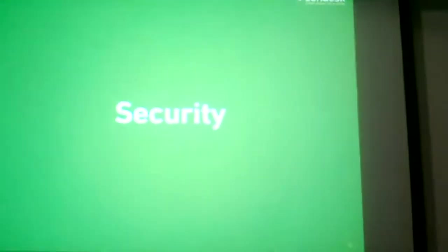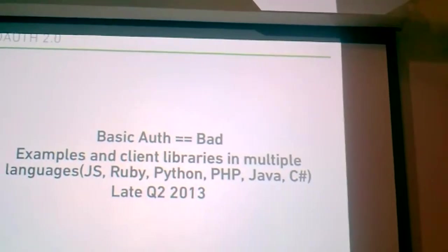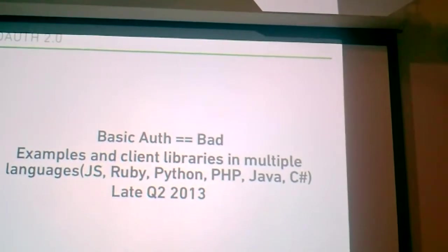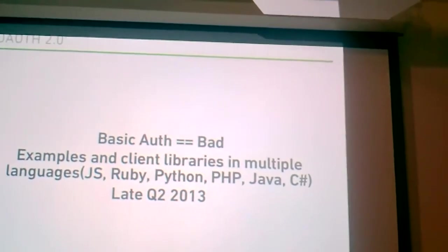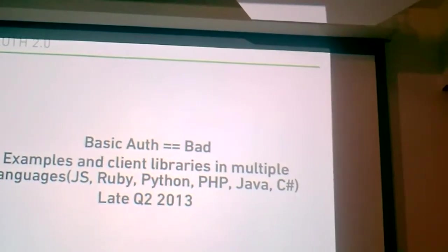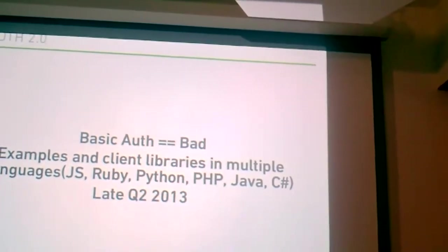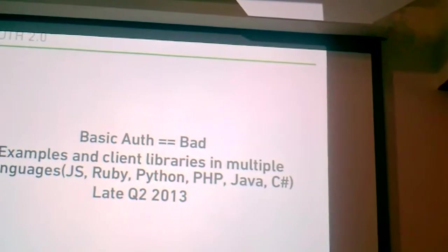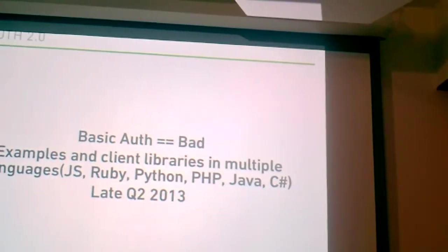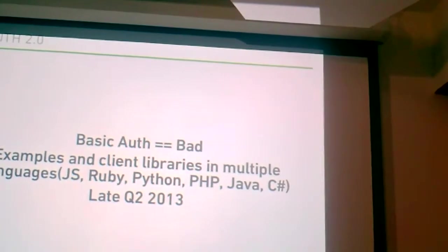Next, we're talking about security. As Morten alluded to, we're moving to OAuth 2. Basic OAuth is bad — we don't want your passwords in the clear. We're going to push this very soon and we're going to have examples of client libraries in multiple languages, and that will actually get pushed out in late Q2.